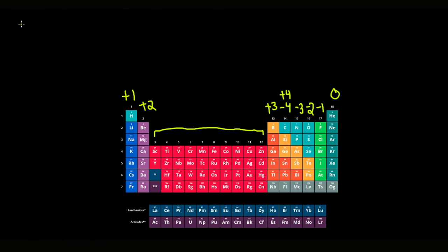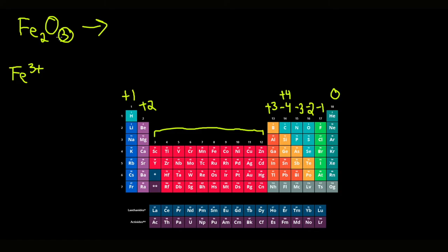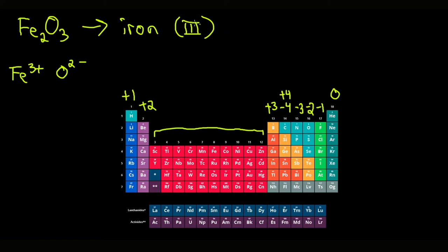To solve this problem, we indicate the ion explicitly. For Fe2O3: working the crisscross backwards, iron is three plus (since the 3 subscript came from oxygen's charge of two minus). So we write iron(III) oxide, using Roman numerals in brackets to indicate it's iron three. The rest of the naming remains exactly the same.